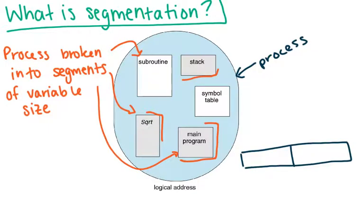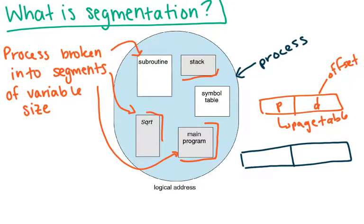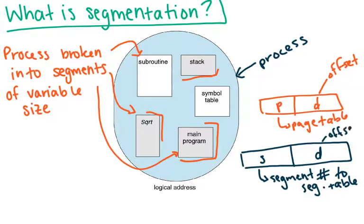The address is going to look a little different. Before we had an address with the page number that would allow us to go into the page table, and then we had an offset. It's going to be similar. We're going to have s, the segment number, and there's going to be a segment table. And then we're also going to have an offset d, which is our offset into the segment itself. Very similar, just different name for it and the idea that it's in variable sizes, not fixed size.